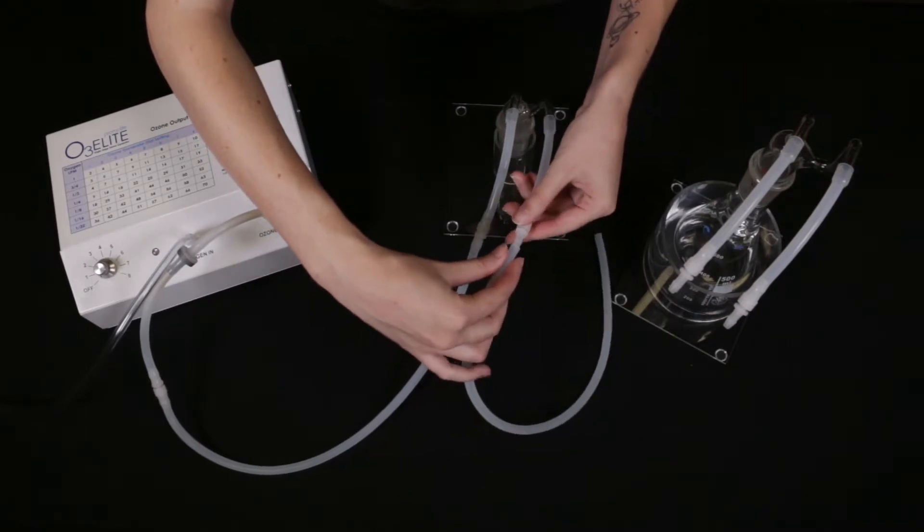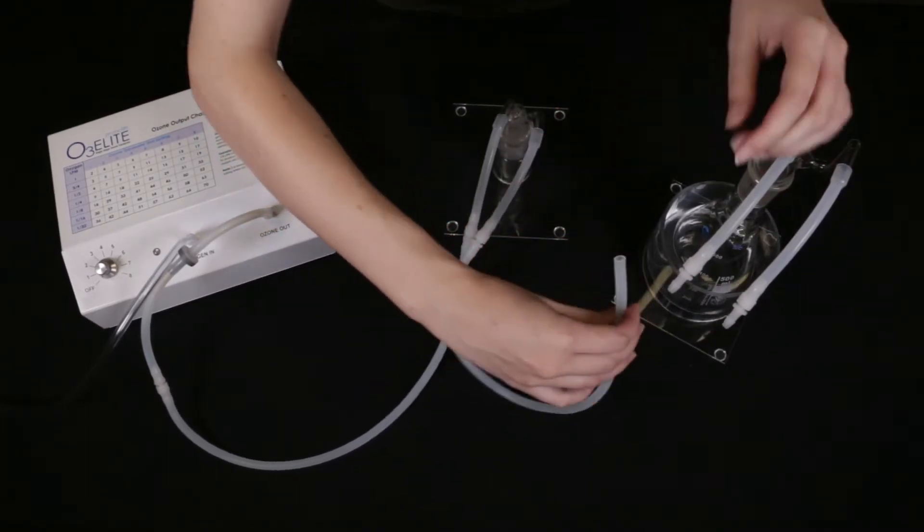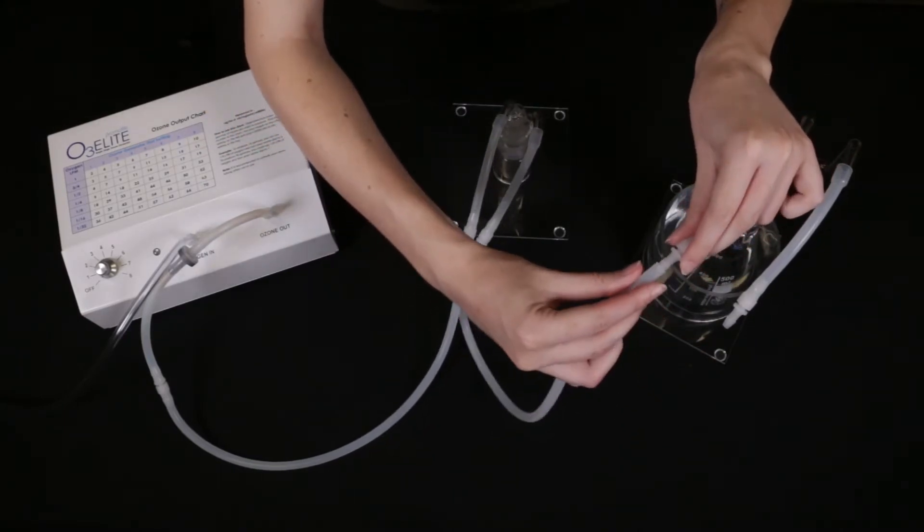Then attach the silicone tubing to the ozone out straw of the trap and attach the other end of the tubing to the ozone in straw of the bubbler or humidifier.